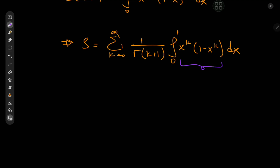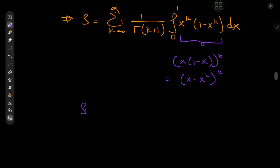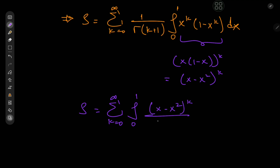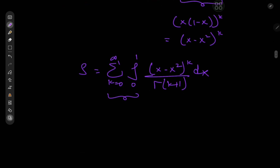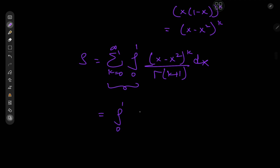Notice that we can play around with this term in that we can write x to the k times 1 minus x to the k as x times 1 minus x to the k, which equals x minus x squared to the k. So we have the sum over k from 0 to infinity of the integral from 0 to 1 of x minus x squared to the k divided by gamma k plus 1 dx. We then switch up the order of the integration and summation operators: the integral from 0 to 1 of the sum over k of x minus x squared to the k divided by gamma k plus 1, which of course is k factorial.